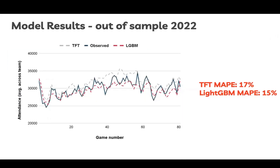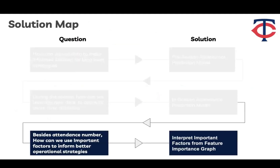As results, the LightGBM predictions — shown by the red dotted line — align very well with the actual observations and slightly outperform the previous Transformer model. Beyond predicting attendance, we also want to utilize the important factors from the model to inform better operational strategies, by interpreting feature importance from the LightGBM model.